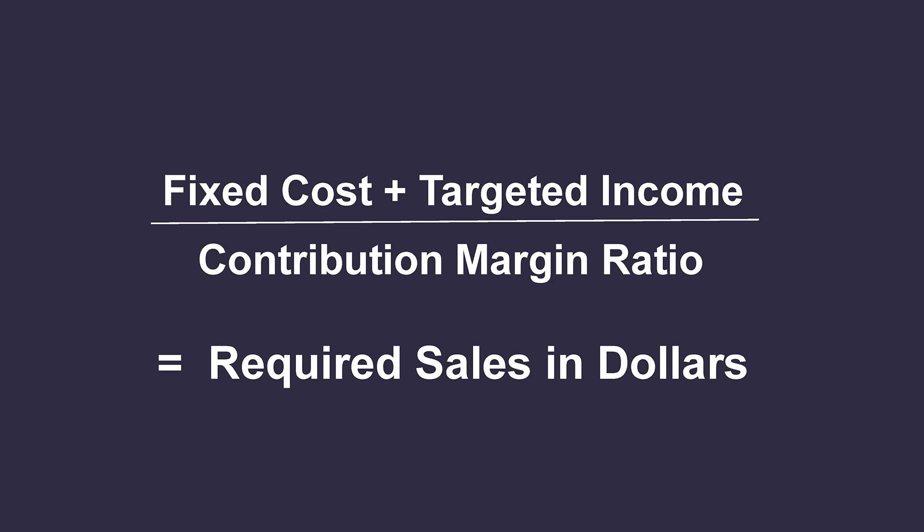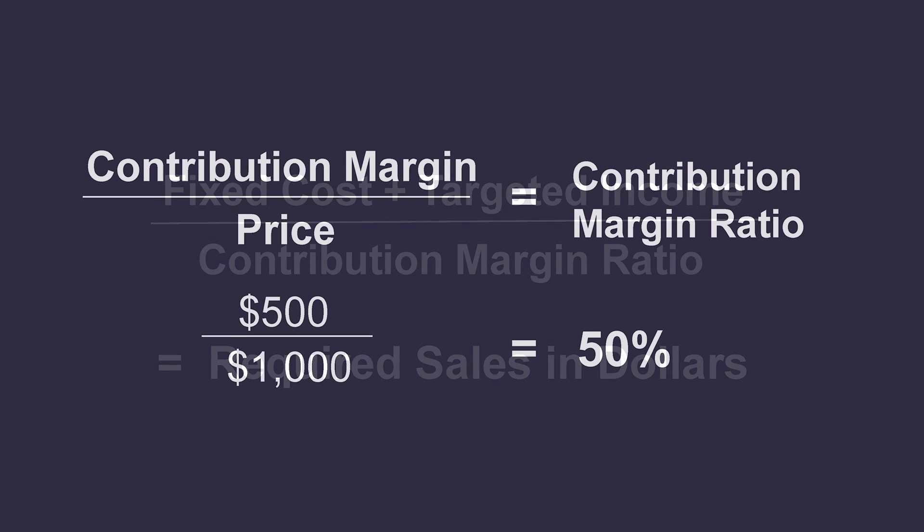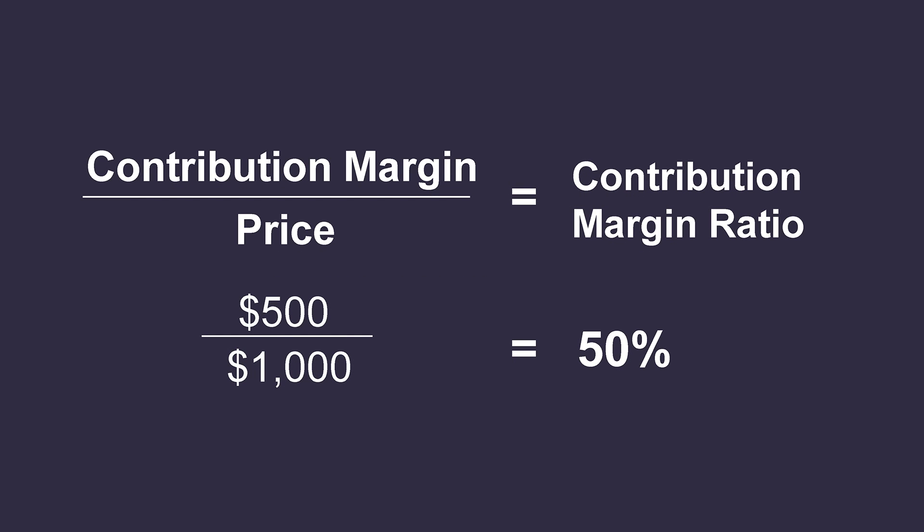To determine the required sales in dollars, you need to add your fixed cost plus targeted income, and divide that by your contribution margin ratio. To determine the contribution margin ratio, use the formula: contribution margin divided by the price. In this case, your contribution margin is $500 divided by $1,000, which equals 50%.